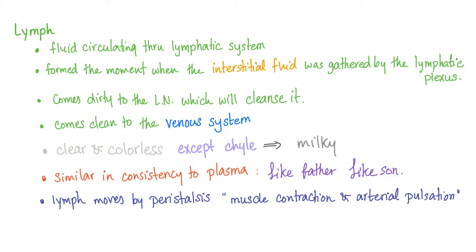As I've told you before, any fluid in your body comes from the plasma — your tears, your mucus, your saliva, etc., all come from the plasma. Lymph moves by peristalsis, thanks to muscle contraction and arterial pulsation.